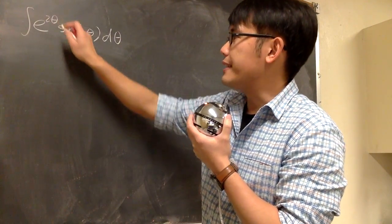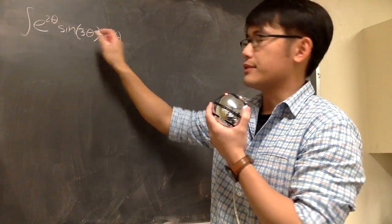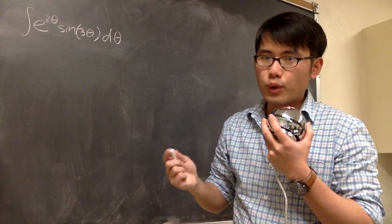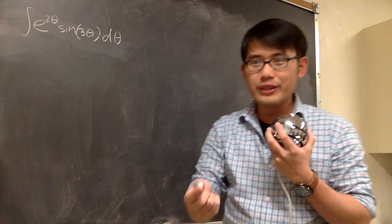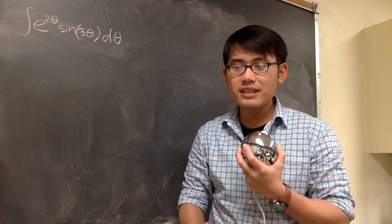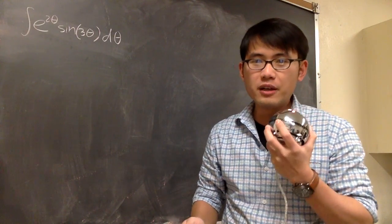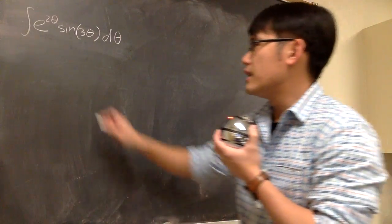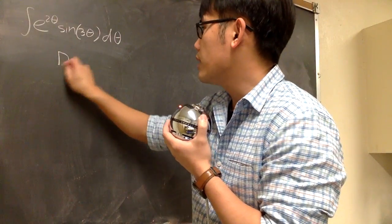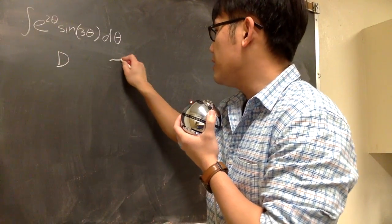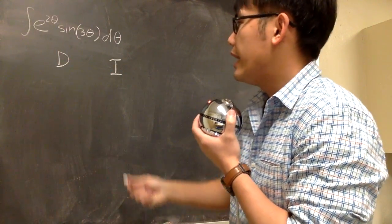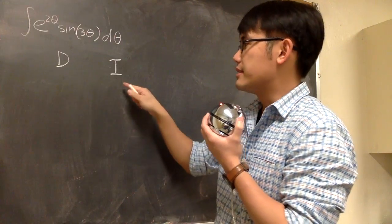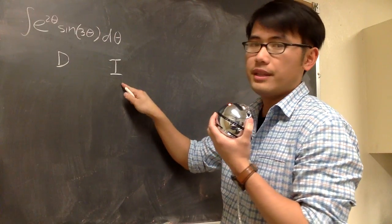Let's integrate e to the 2 zeta times sine of 3 zeta. This integral requires integration by parts. I will show you with the DI method, and this is the third step that we have to know when using the DI method. So let's get to work. We put down the D and the I columns, and then we choose something to be differentiated and something else to be integrated.